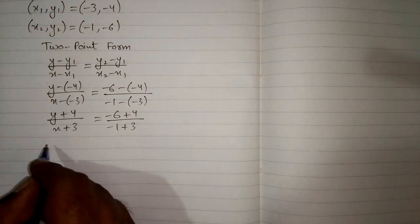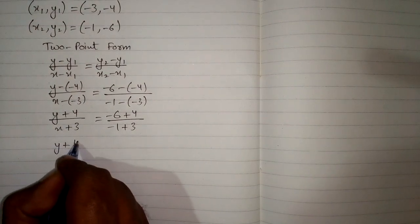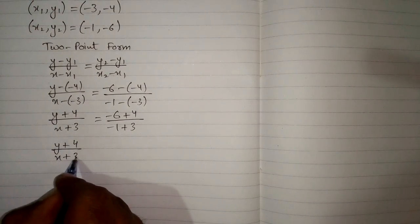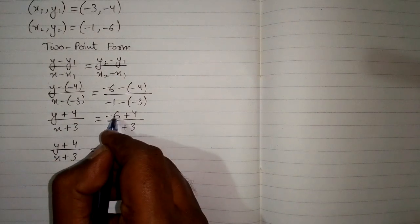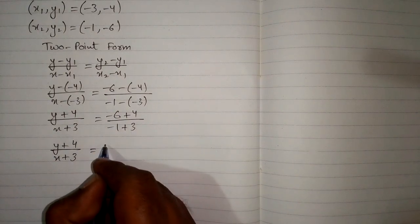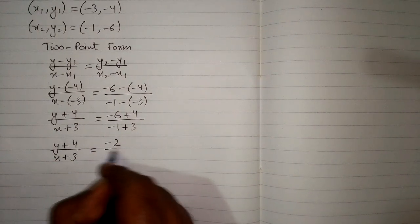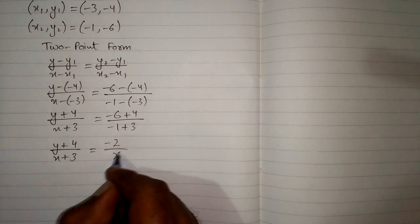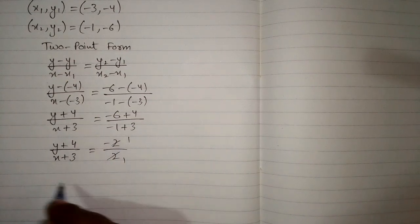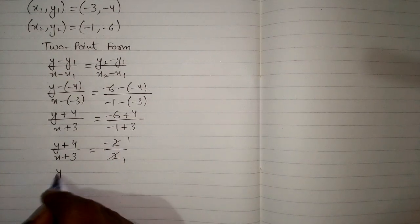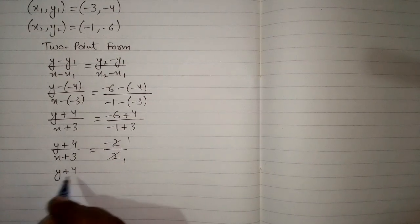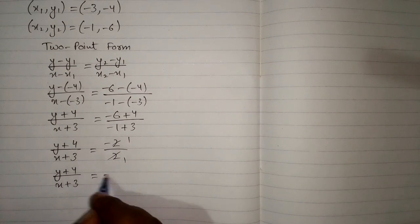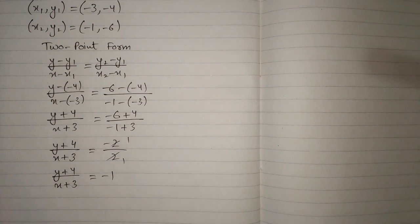So we have y plus 4 upon x plus 3 is equal to: minus 6 plus 4 is minus 2, and minus 1 plus 3 is 2. We can cancel the 2 and the 2, so y plus 4 upon x plus 3 is equal to minus 1.